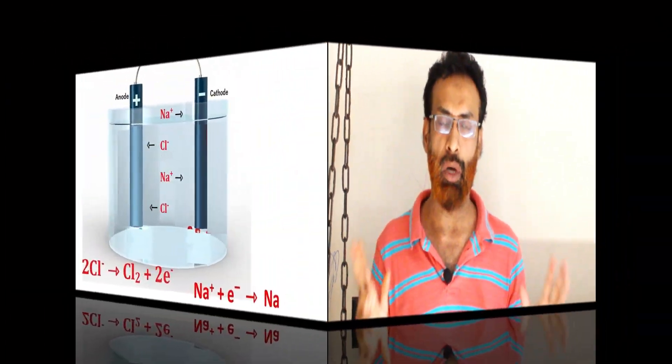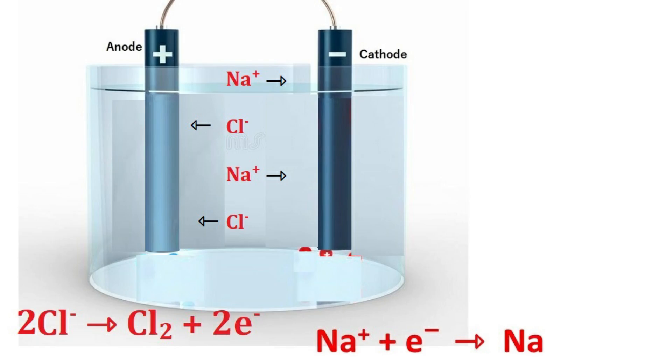With sodium chloride electrolysis, sodium chloride could be molten. Molten sodium chloride just has two ions: sodium ion and chloride ion. Accordingly, you will get sodium at the cathode and chlorine at the anode. These are all examples of electrolysis containing a single compound with just one type of cation and one type of anion.